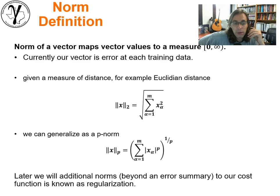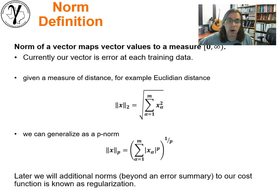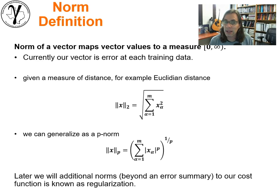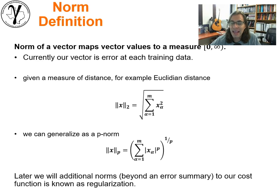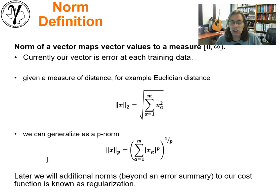Let me formalize the definition of a norm. A norm of a vector is going to map the vector values to a measure that goes between zero and infinity. In our current case, we're considering our vector to represent the errors across all of our training data, and we could work with the L2 norm, effectively giving us the distance in that hyperdimensional space of all those error terms. We could generalize — there's no reason to stop at L2. We could work with any P-norm, going to any power: third, fourth, fifth power, and so forth. When we talk about ridge regression and lasso, we'll talk about additional norms applied beyond this error summary — applying a norm to the magnitude of the parameters in the model, which is what we call regularization.